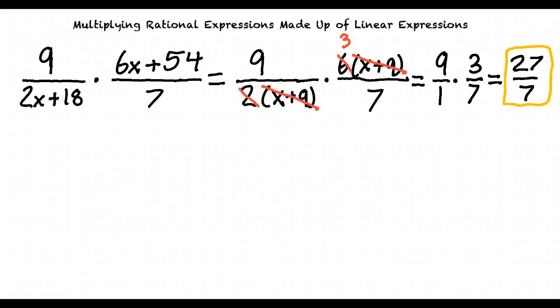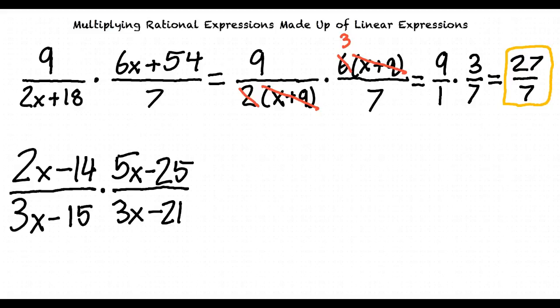What do you do when there is factoring needed in the numerator and the denominator in both of the fractions? A great example of a problem like this would be 2x minus 14 over 3x minus 15 times 5x minus 25 over 3x minus 21.